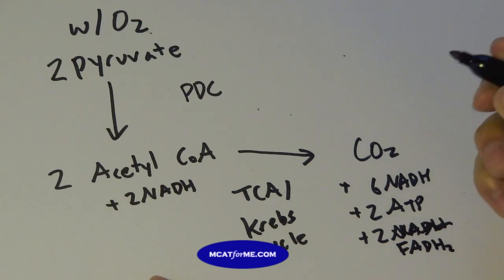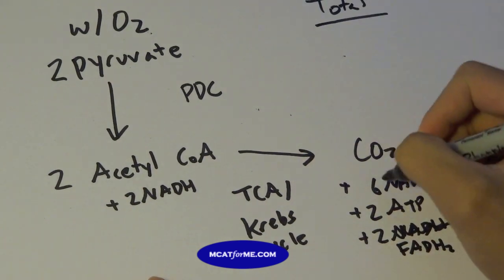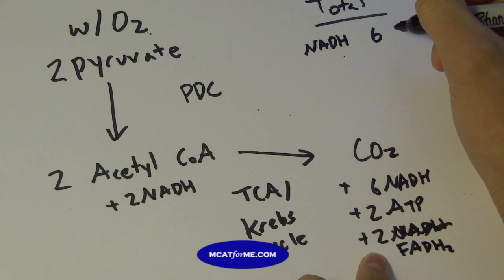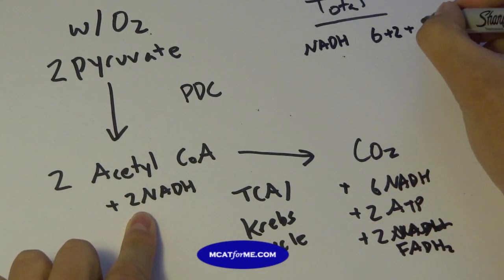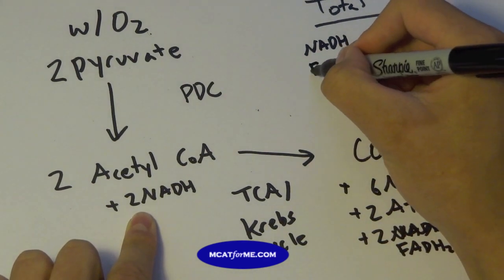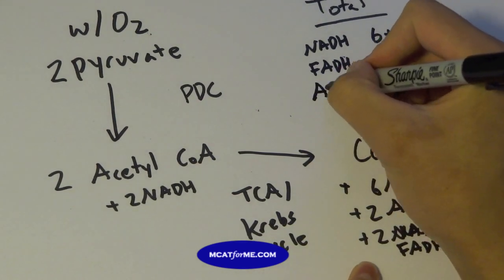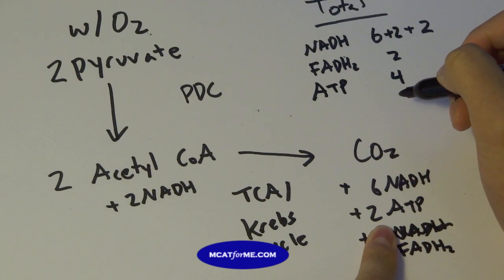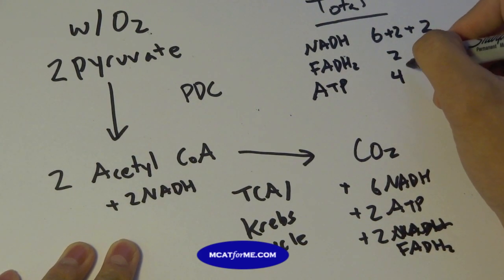And so after all this, what do we do with NADH and FADH2? Well, let's count it up. So our total, our net. So we have number of NADH. Well, we have six from the TCA cycle. We have two from acetyl CoA from the PDC cycle. But remember, we also have two from glycolysis, right? FADH2, well, we only have two just from the TCA cycle. ATP, we actually have four because we have two from the TCA cycle. And we also have two from glycolysis. And so keep track of these numbers. We have 10 NADH, two FADH2, and four ATP.